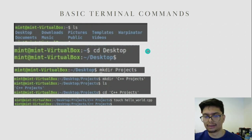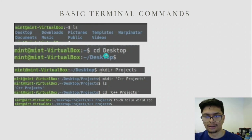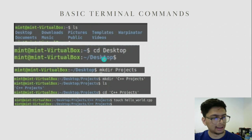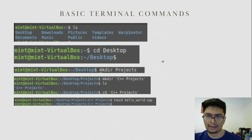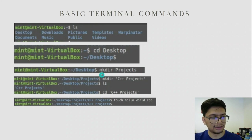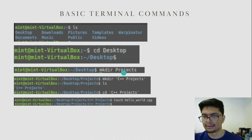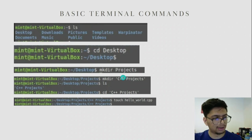If you want to go into a certain folder or directory, you can type cd followed by the directory name. For example, if I want to go into Desktop, I type cd desktop, and now I'm in the Desktop directory. If I wanted to create a folder called 'projects' in this Desktop directory, I can type mkdir and then the name of the folder — in this case, projects. Then I can cd into projects.